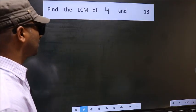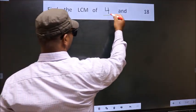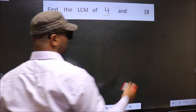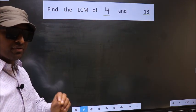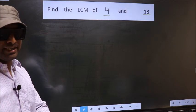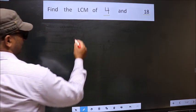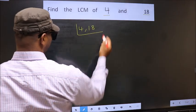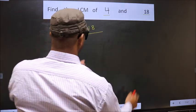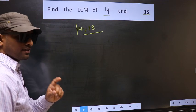Find the LCM of 4 and 18. To find the LCM, first we should frame it in this way. See, 4, 18. This is your step 1.